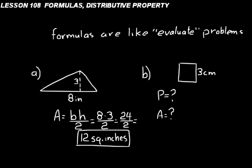Look at problem B. There's a square with a side of 3 centimeters. What is its perimeter and what's its area? Let's get our formulas first and write those down. The perimeter of a square is 4S — 4 times the length of a side. All the sides are the same length on a square.